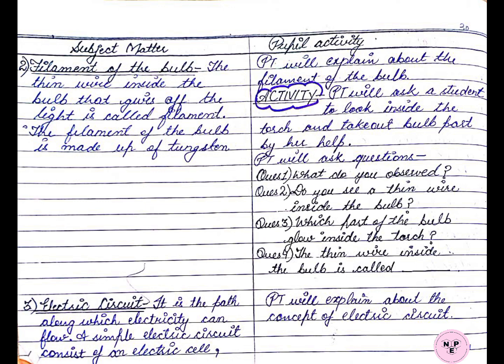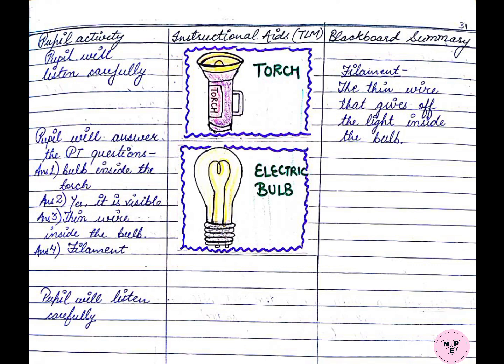You can also write this activity in your lesson plan. For proper concept clarity, the pupil teacher can also carry real-life objects such as the torch or the bulb, so that the pupils can observe the filament of the bulb very clearly and closely.